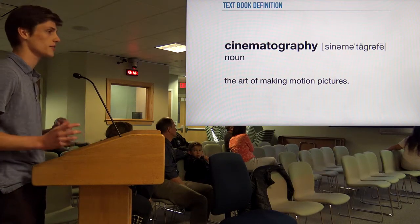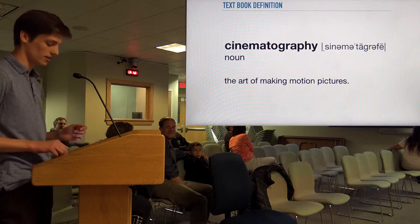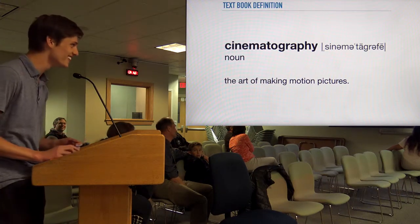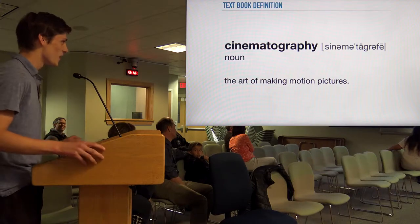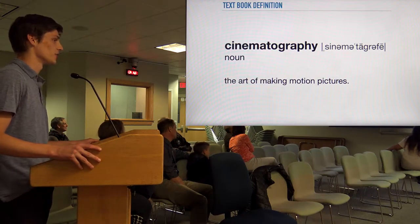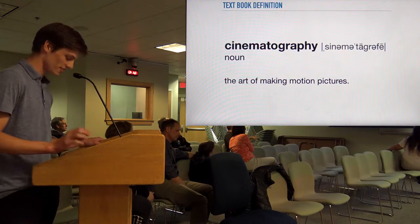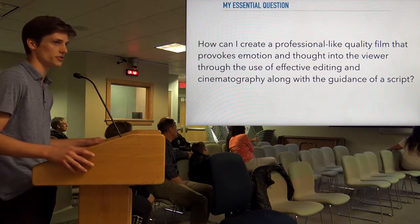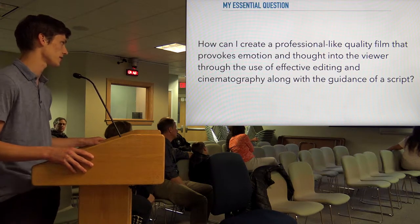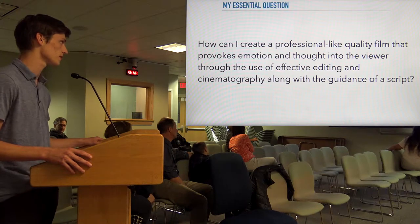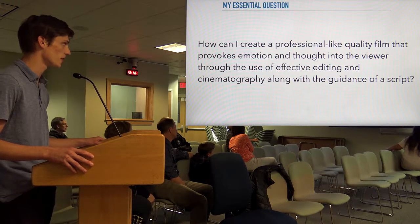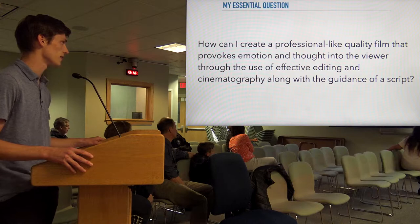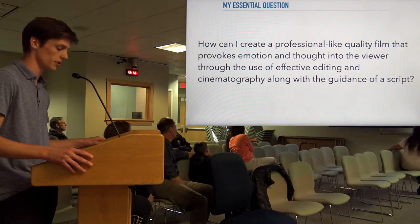I will be going kind of quick because I have a lot to get through. I have a watch to make sure I don't go over time, so just kind of hold your questions for the end. I made an essential question for my capstone, and that was: how can I create a professional-like quality film that provokes emotion and thought into the viewer through the use of effective editing and cinematography, along with the guidance of the script?